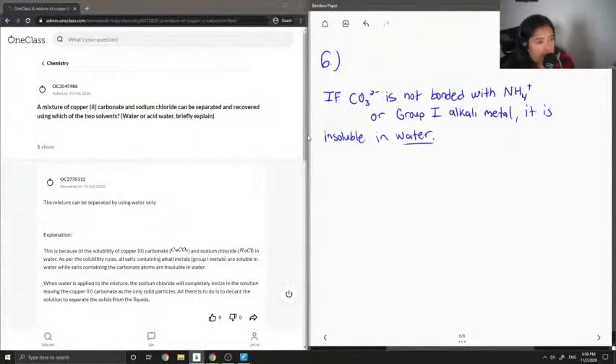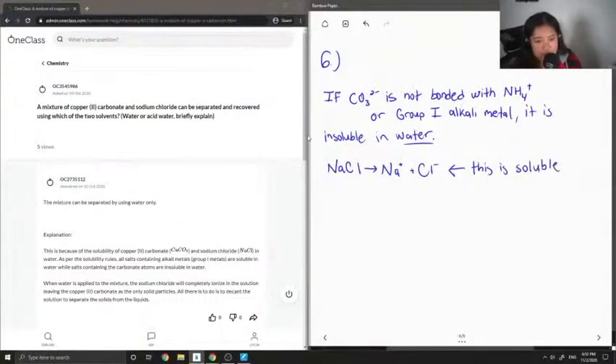And let's look at sodium chloride. Sodium chloride is made up of a group-1 alkali metal and also a chlorine ion. So this is soluble in water if we look at our solubility rules again.